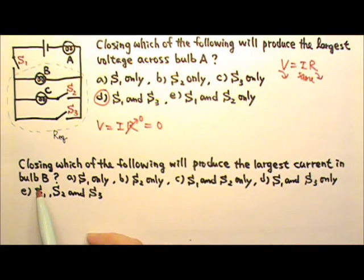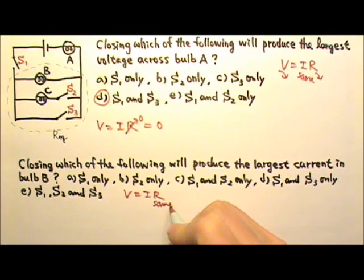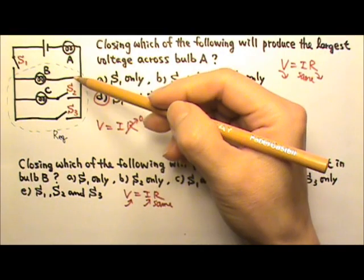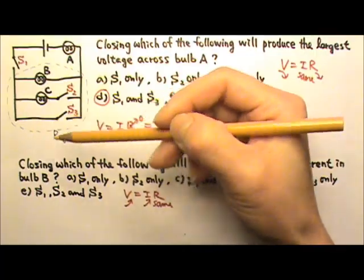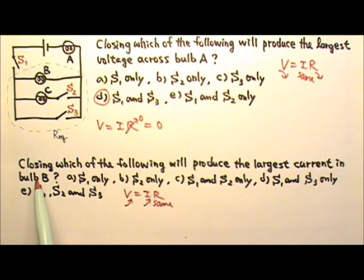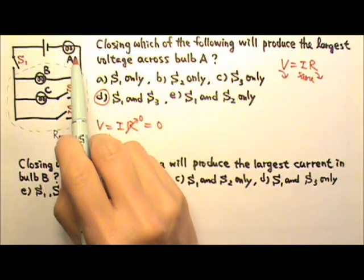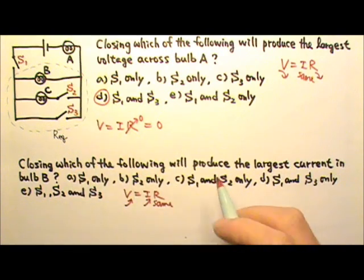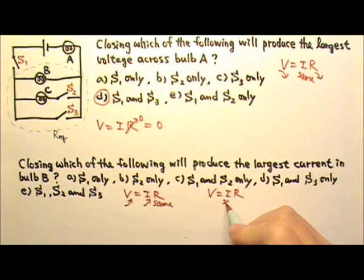Now we want the largest current in bulb B. Because V equals IR, the bulb B has a certain resistance. To give bulb B the largest current means bulb B needs the largest voltage. These three segments are in parallel, so they all get the same voltage. In order for bulb B to get any current at all, S1 has to be closed. And this combination and bulb A are in series. If they are in series, that means bulb A and this group must have the same current.